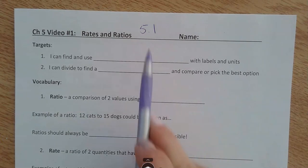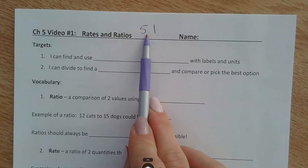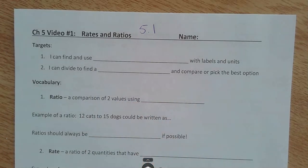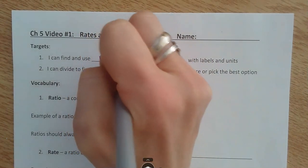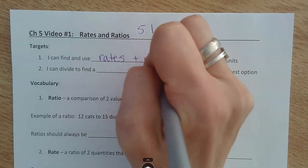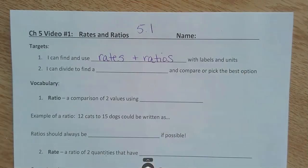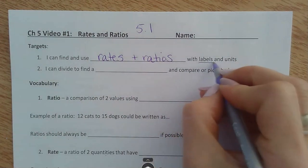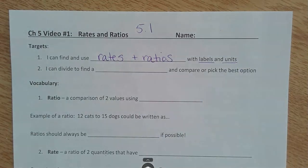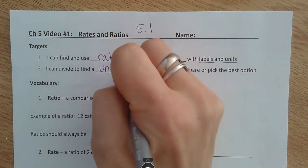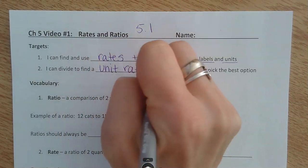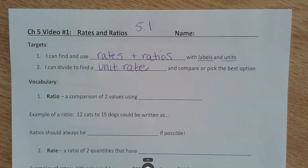Video one for chapter five goes with section 5.1 and we're going to talk about rates, ratios, and unit rates. The first target says: I can find and use rates and ratios with labels and units, making sure to label or put units on everything we write down. I can divide to find a unit rate and compare or pick the best option. Some of this will spill over into our next video as well.